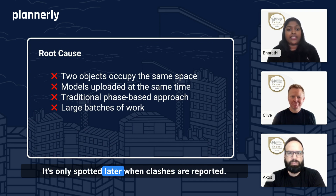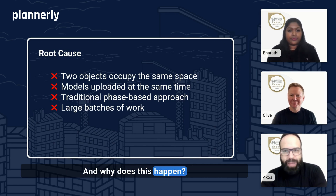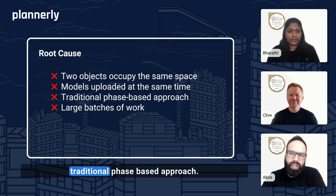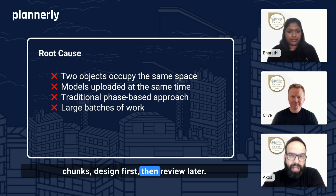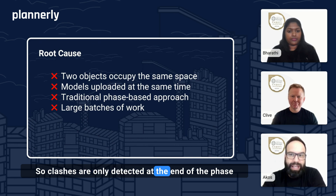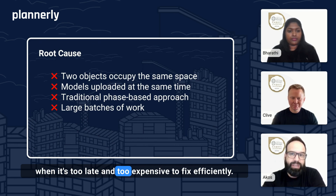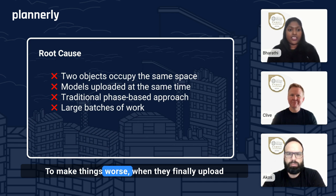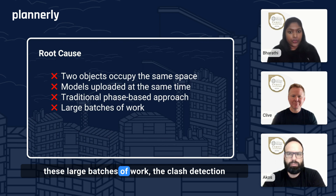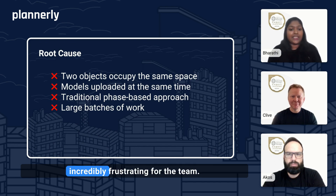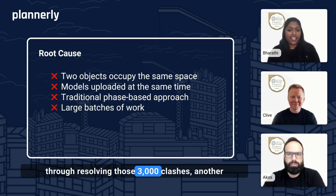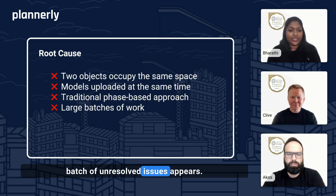It's only spotted later when clashes are reported. And why does this happen? Because teams are following a traditional phase-based approach — everyone completes their work in big chunks, designed first, then reviewed later. So clashes are only detected at the end of the phase when it's too late and too expensive to fix efficiently. To make things worse, when they finally upload these large batches of work, the clash detection tool throws up thousands of clashes. It's overwhelming, time-consuming, and incredibly frustrating. By the time they're halfway through resolving those 3,000 clashes, another batch of unresolved issues appears — this is a vicious cycle.